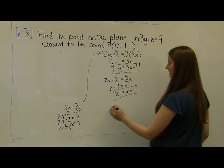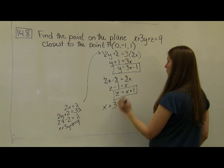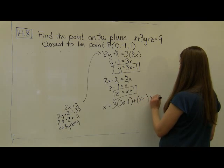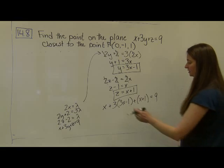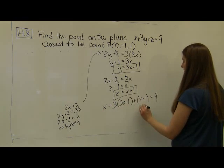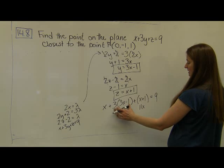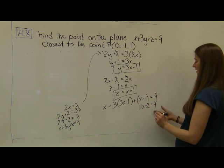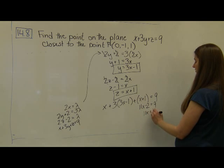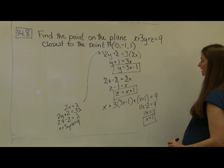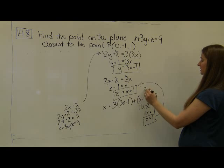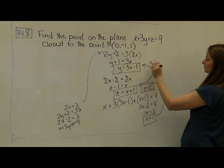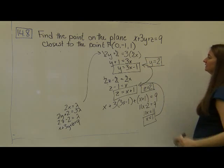Now I plug both expressions into the constraint: x plus 3(3x minus 1) plus (x plus 1) equals 9. This gives x plus 9x plus x equals 11x, and negative 3 plus 1 equals negative 2, so 11x minus 2 equals 9. Adding 2 to each side: 11x equals 11, so x equals 1. It's easy to back-substitute: y equals 3(1) minus 1 equals 2, and z equals 1 plus 1 equals 2.